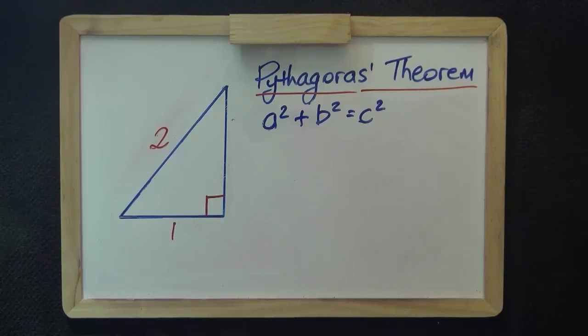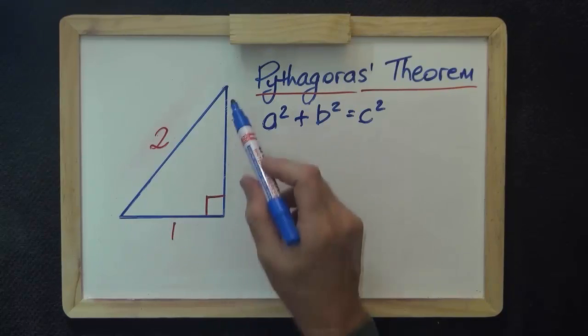For my next example, I have a right triangle, the hypotenuse is 2, and the base is 1, and I want to know this side.